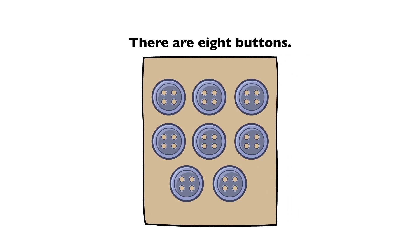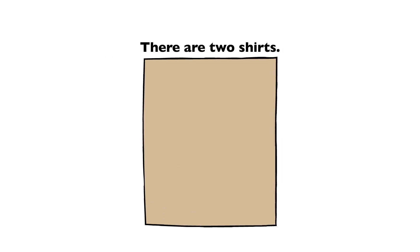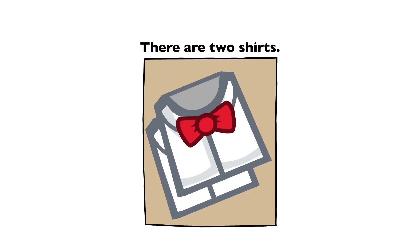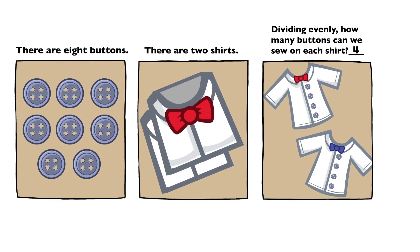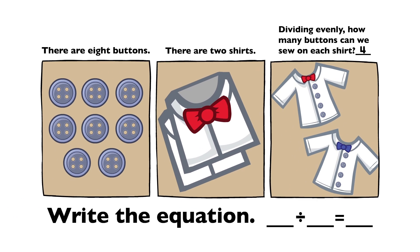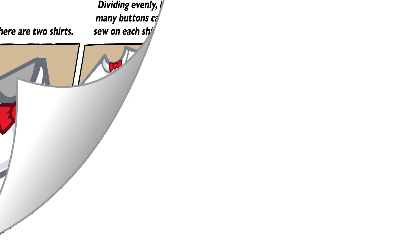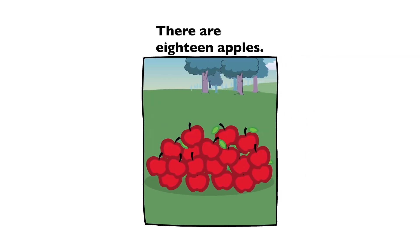There are 8 buttons. There are 2 shirts. Dividing evenly, how many buttons can we sew on each shirt? 8 divided by 2 equals 4.